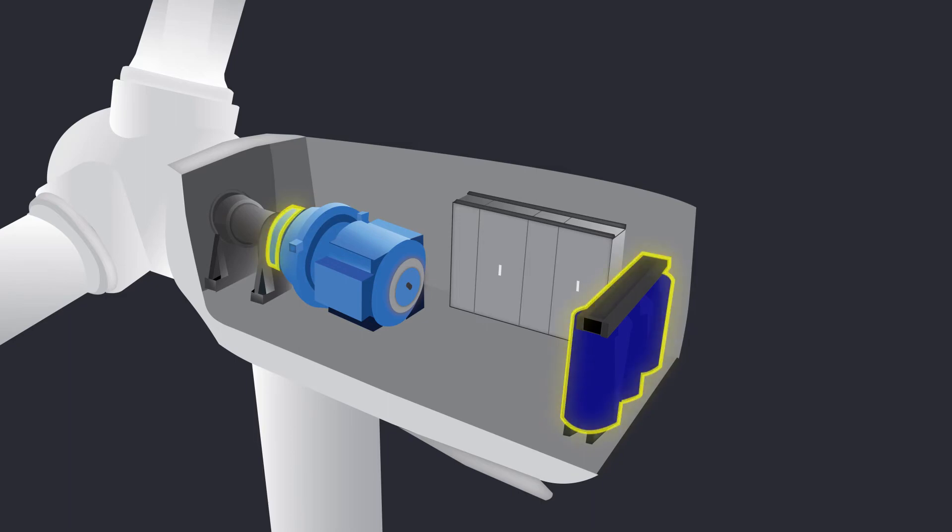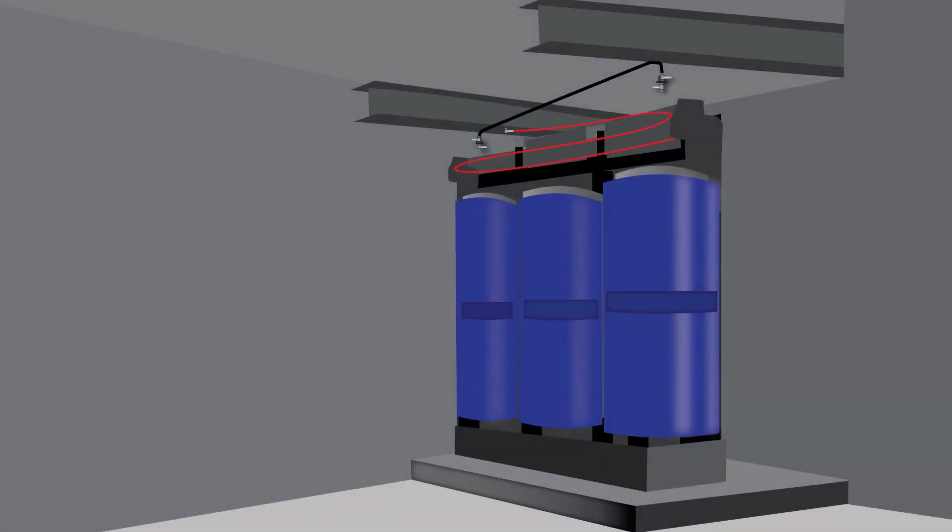To protect exposed areas like the transformer and brake, the indirect release system releases the suppression agent through connected hoses and nozzles.